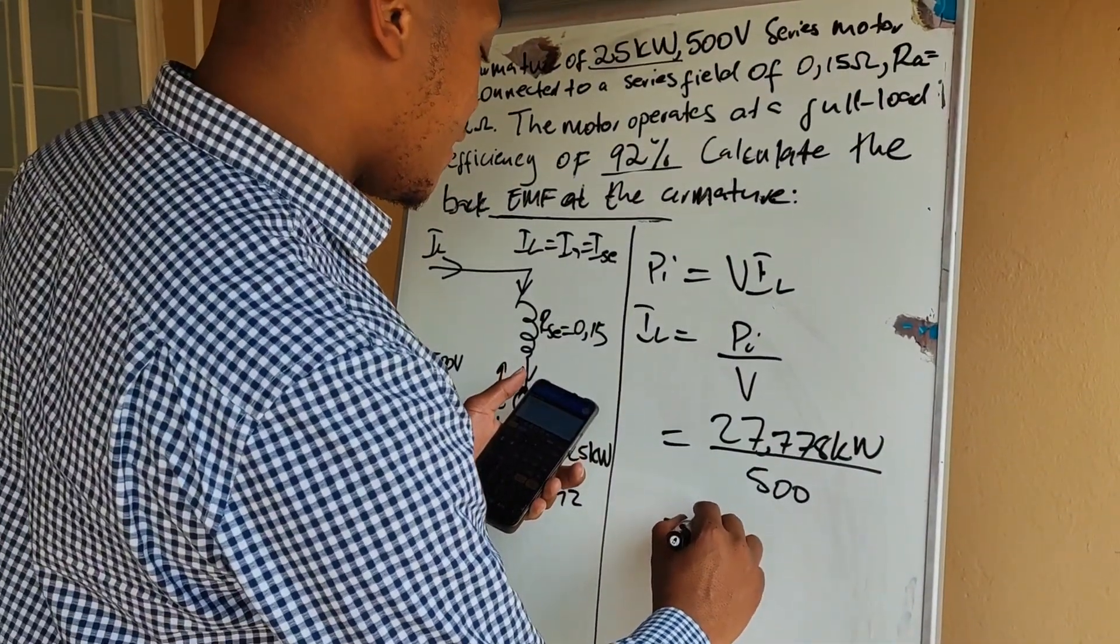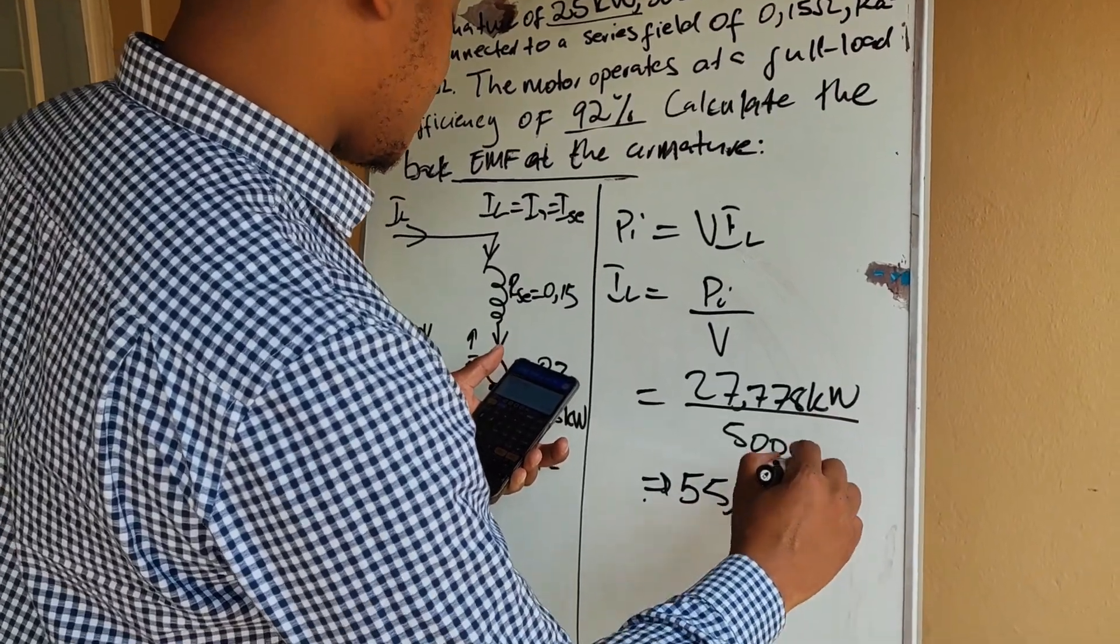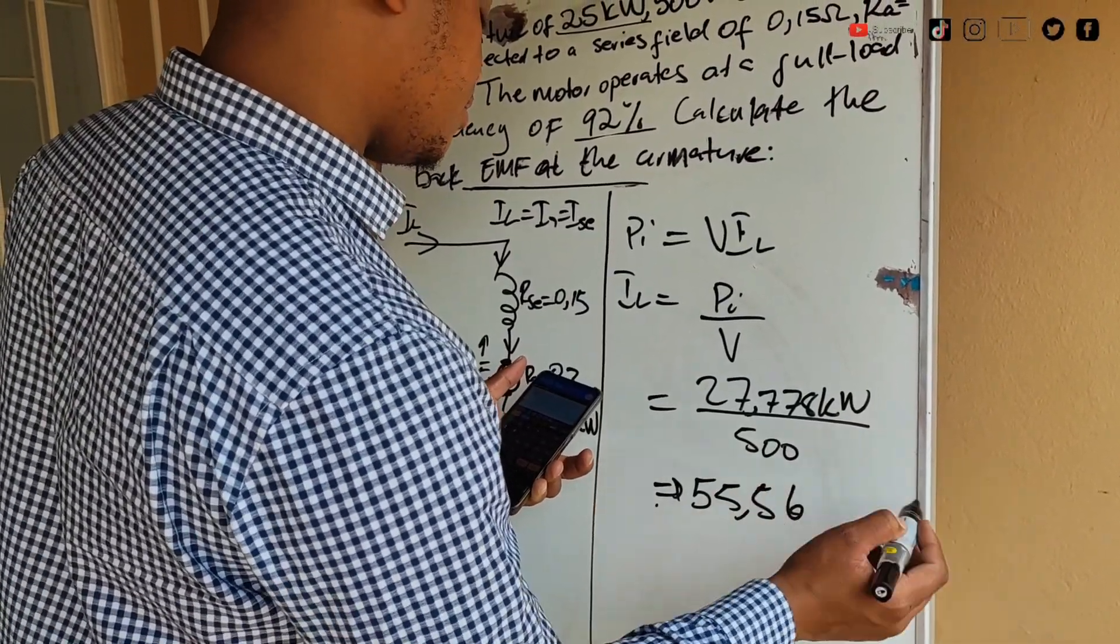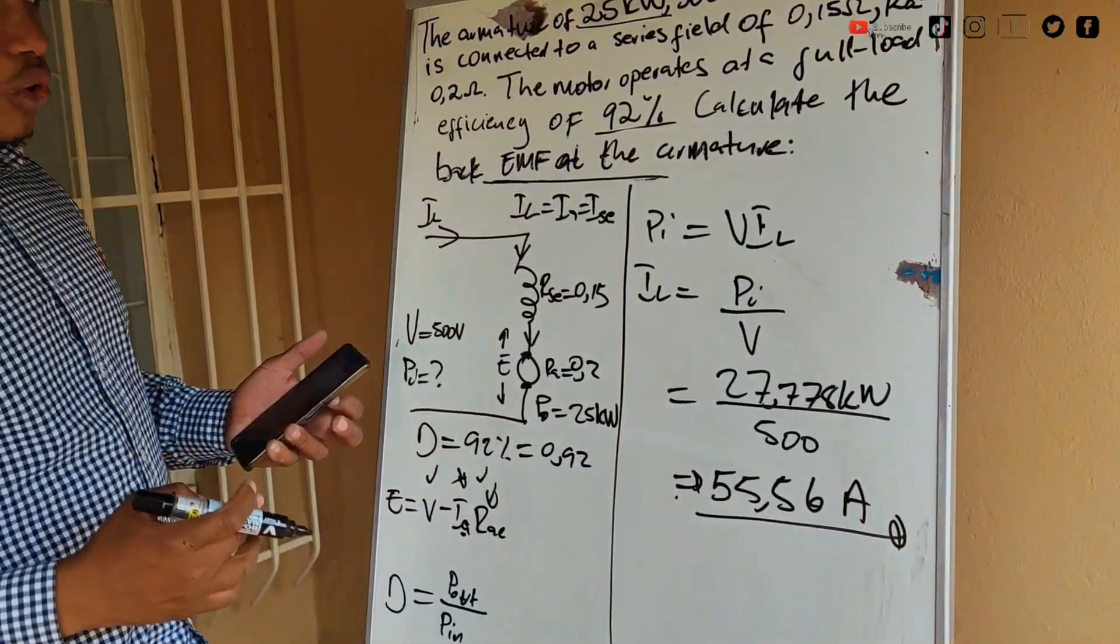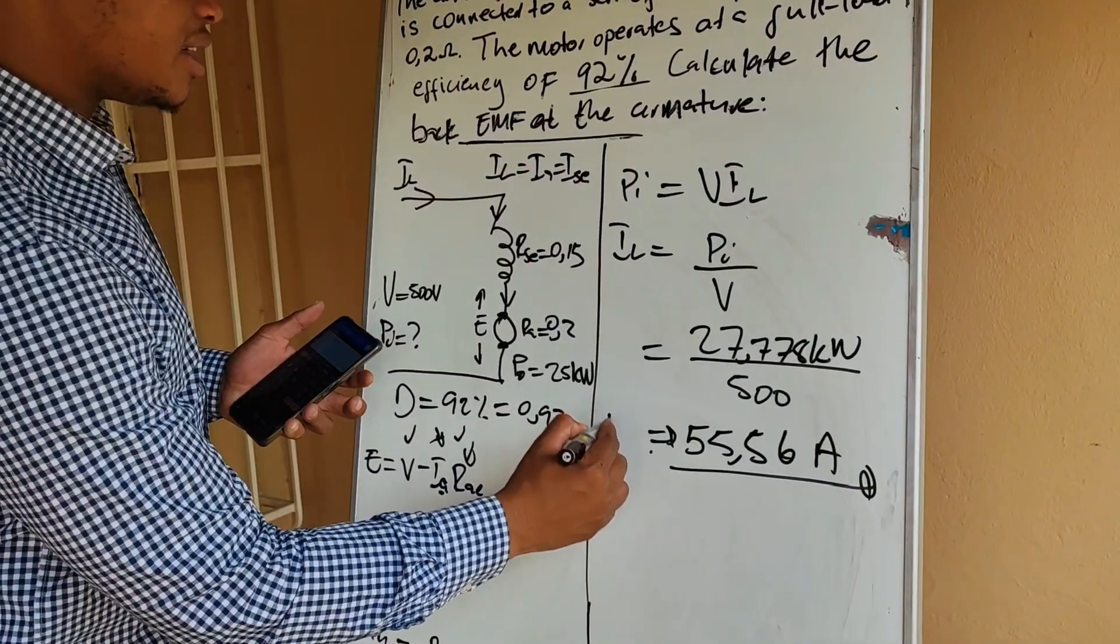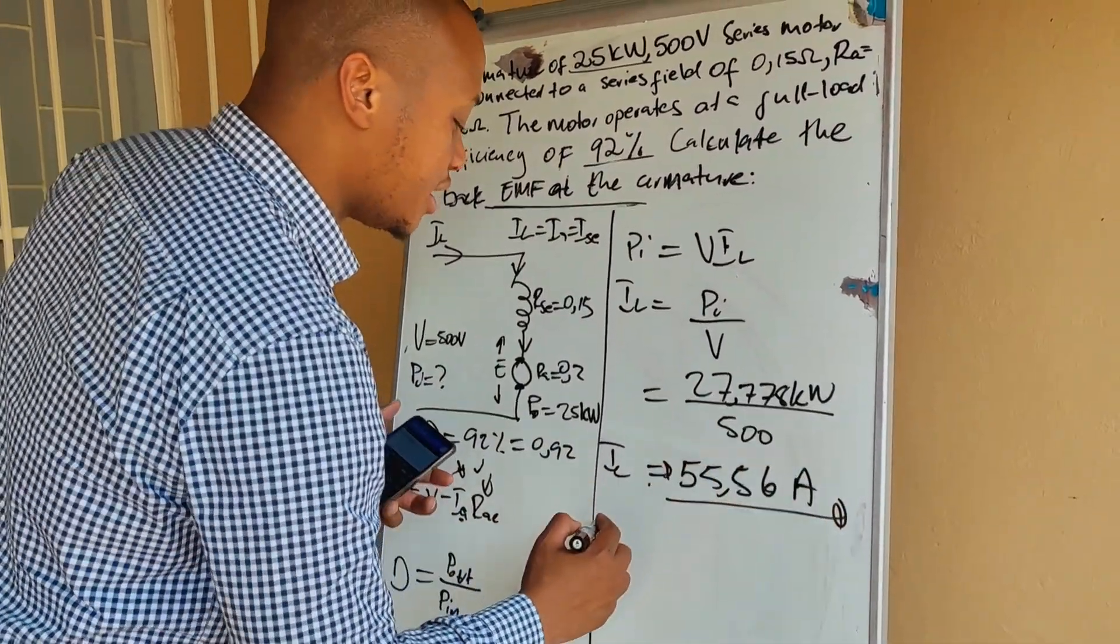So that gives you 55.56 Amperes. So that is now your input current or your line current which is also equal to IA.